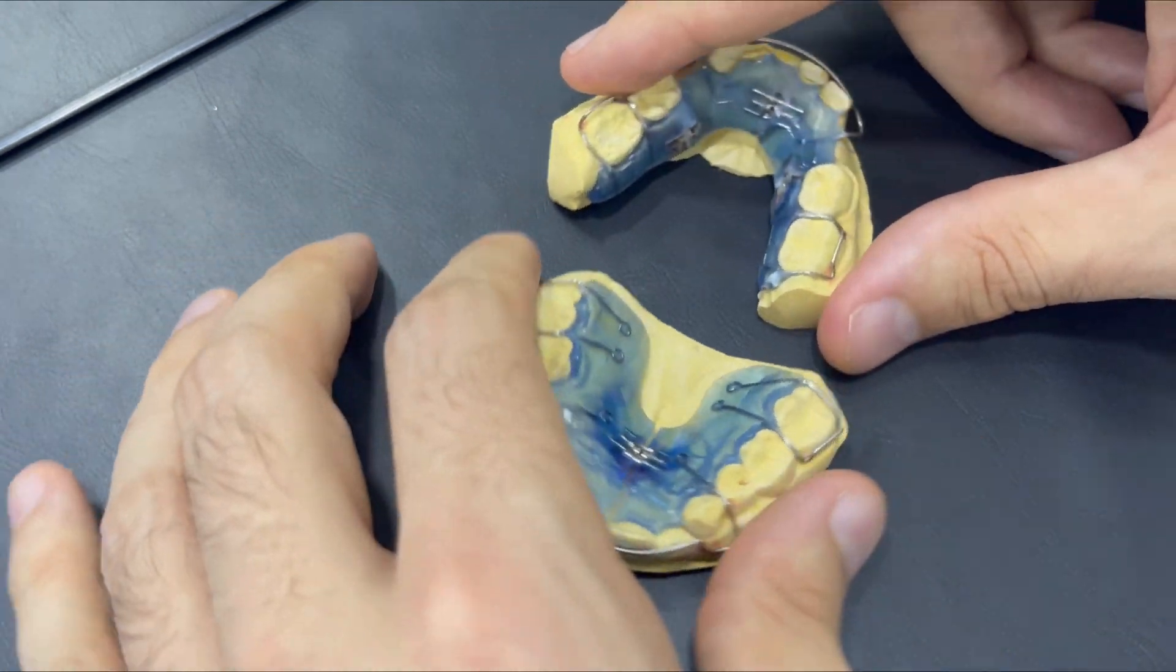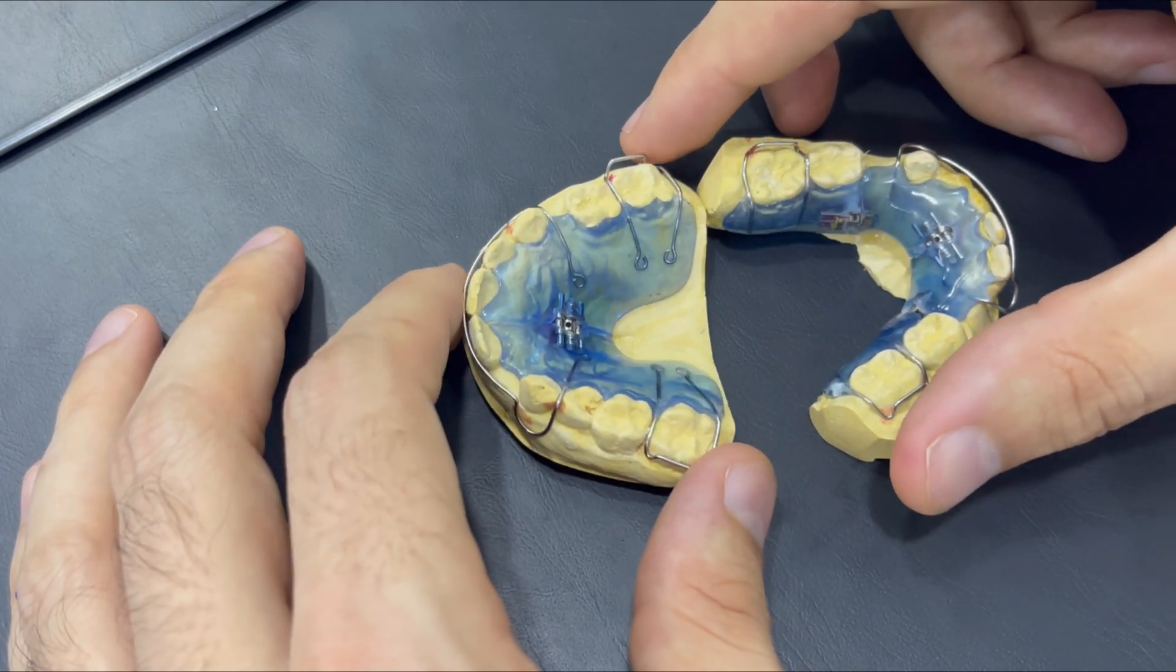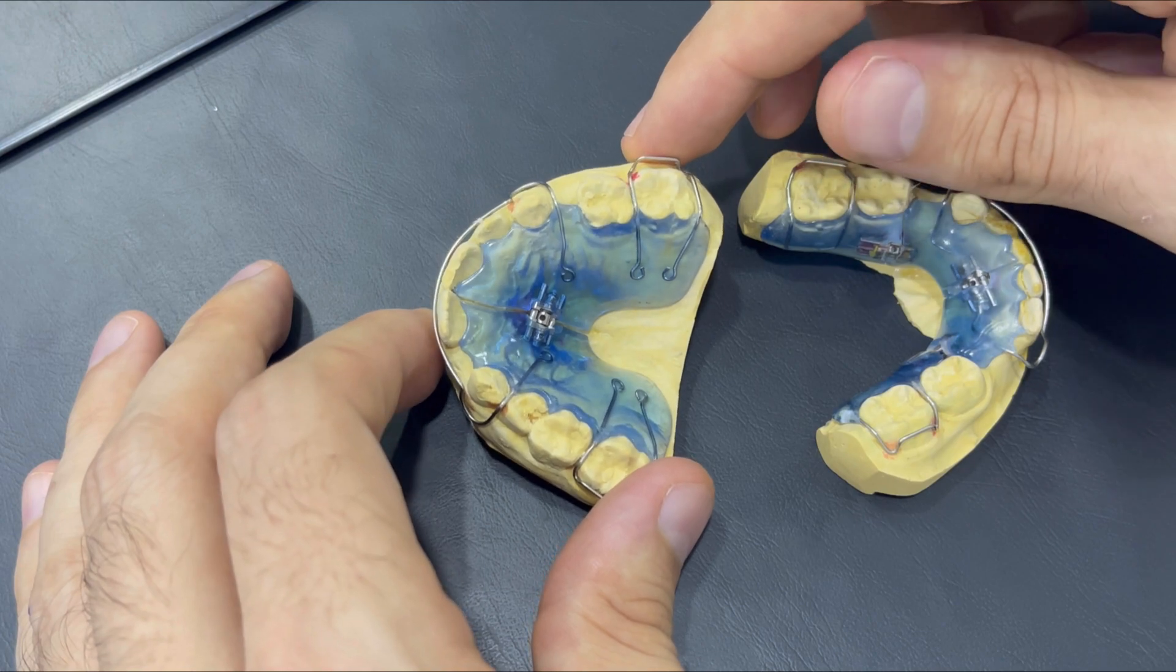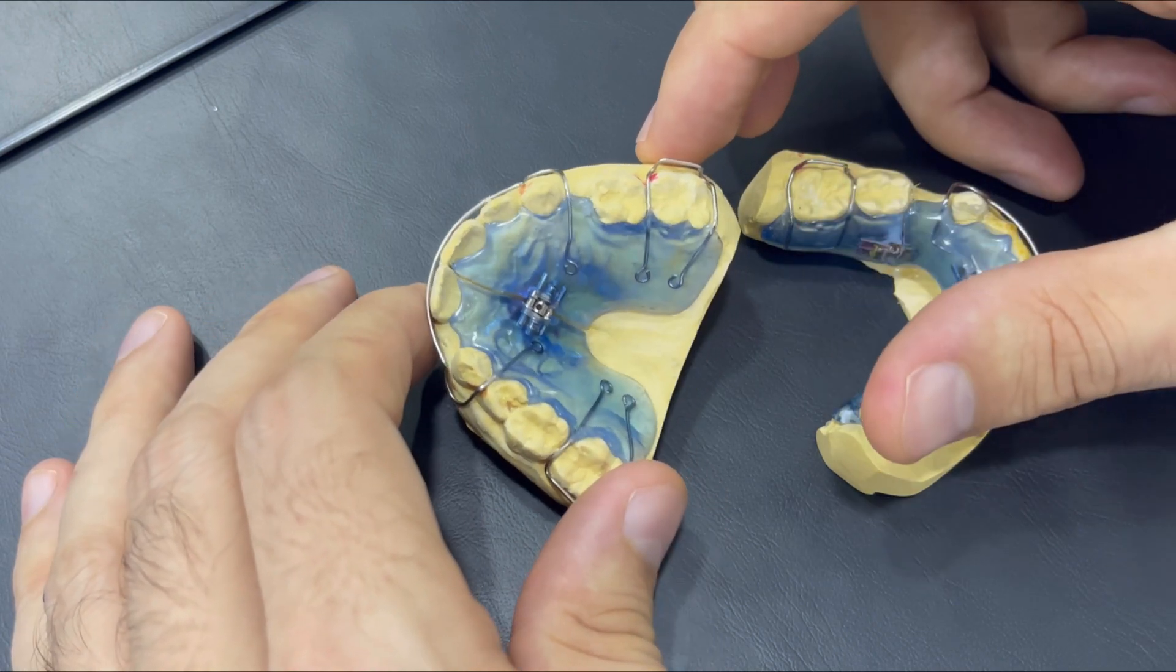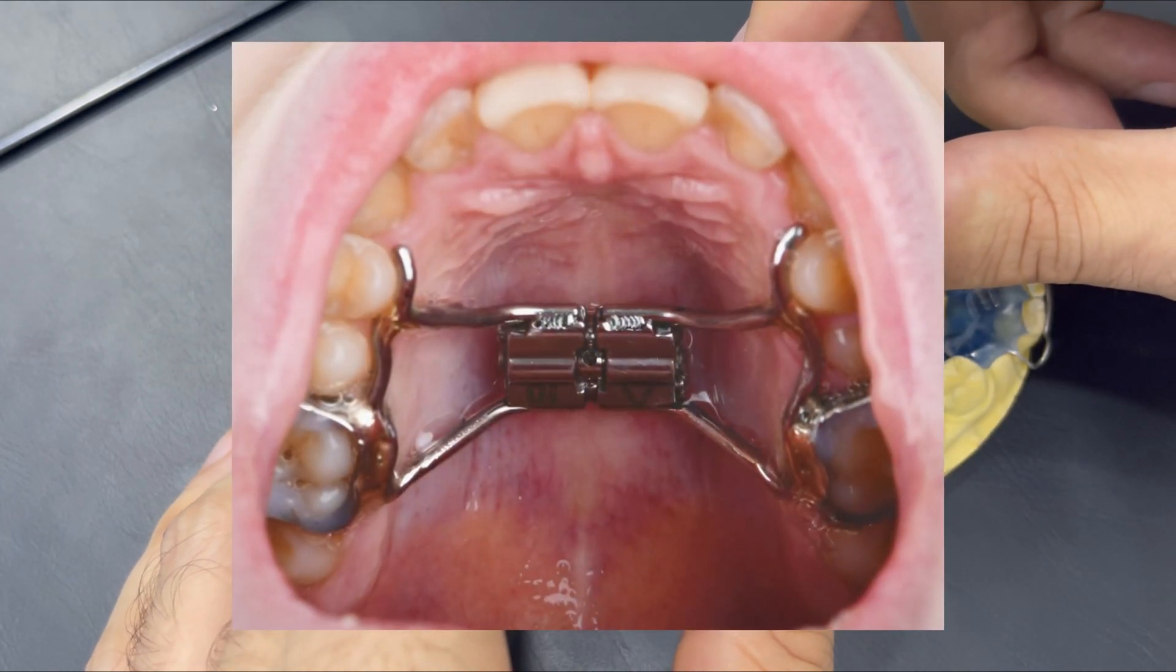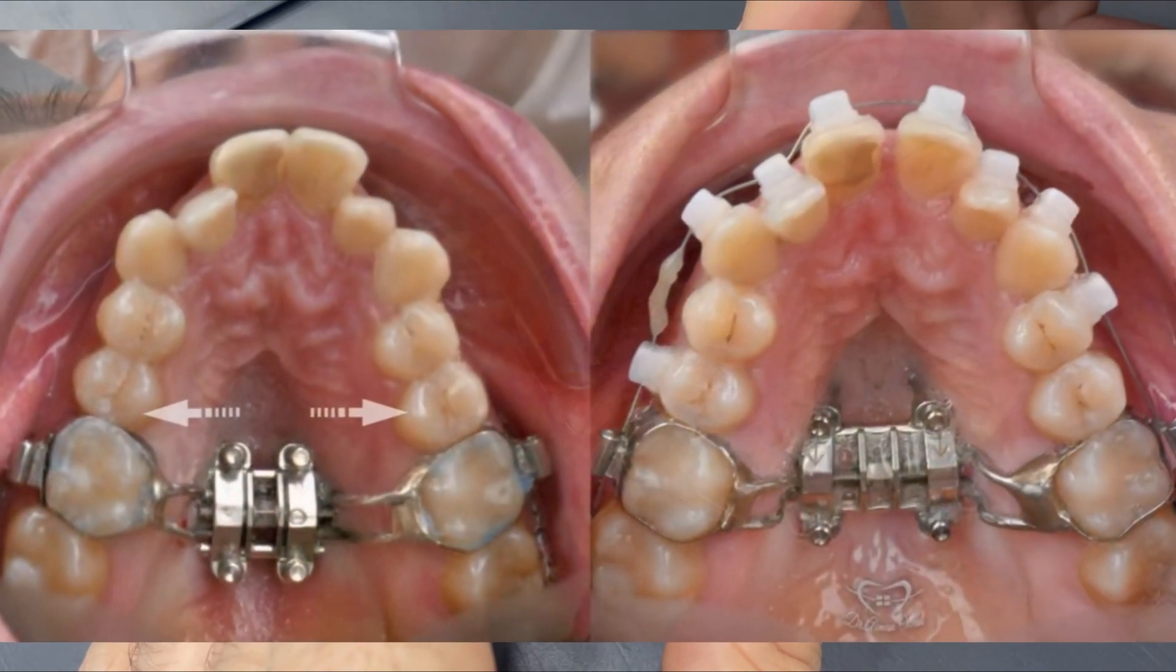The name of this expander is removable Howley expander or Hyrex expander. The other type of expanders are fixed, such as a fixed Hyrex expander or MSE for adult patients.